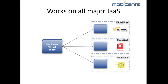MobiSense can be deployed on any of the major cloud infrastructures: Amazon Web Services, Rackspace, OpenStack and Eucalyptus.